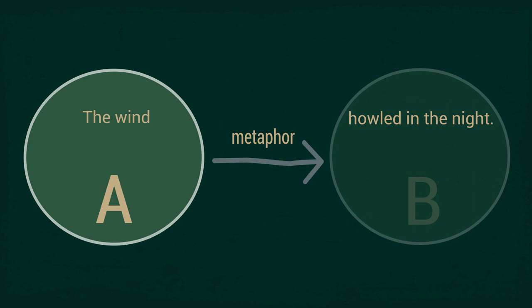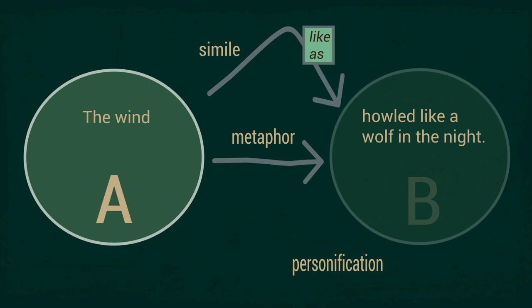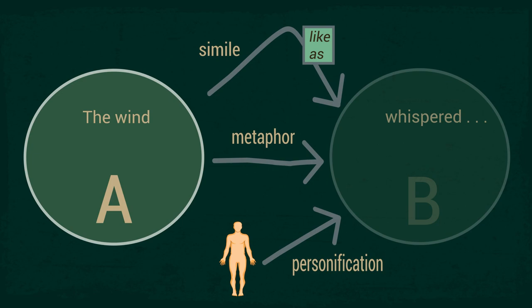You can use an indirect comparison as well, one that goes through a word like 'like' or 'as': 'The wind howled like a wolf in the night.' Then there's personification — that's when the B part of the comparison is a person. 'The wind whispered through the trees.' Persons whisper. Personification.